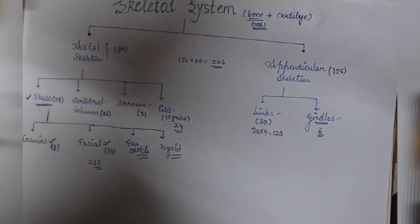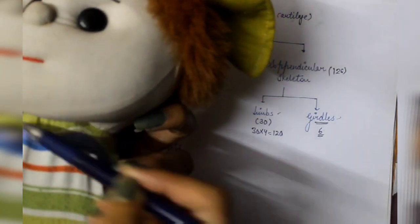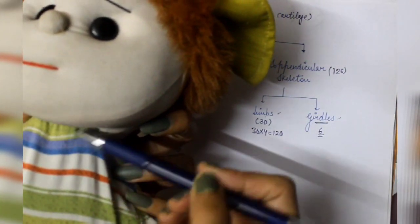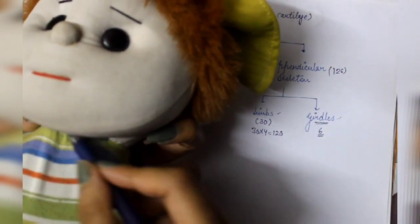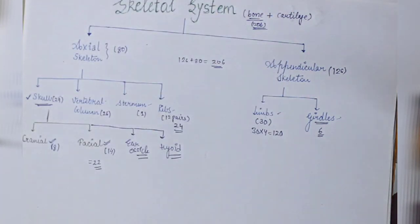Now there are 28 bones, plus one more bone, which is hyoid bone. Hyoid bone is present here in your neck region. The tongue, under the larynx, here is the hyoid bone.